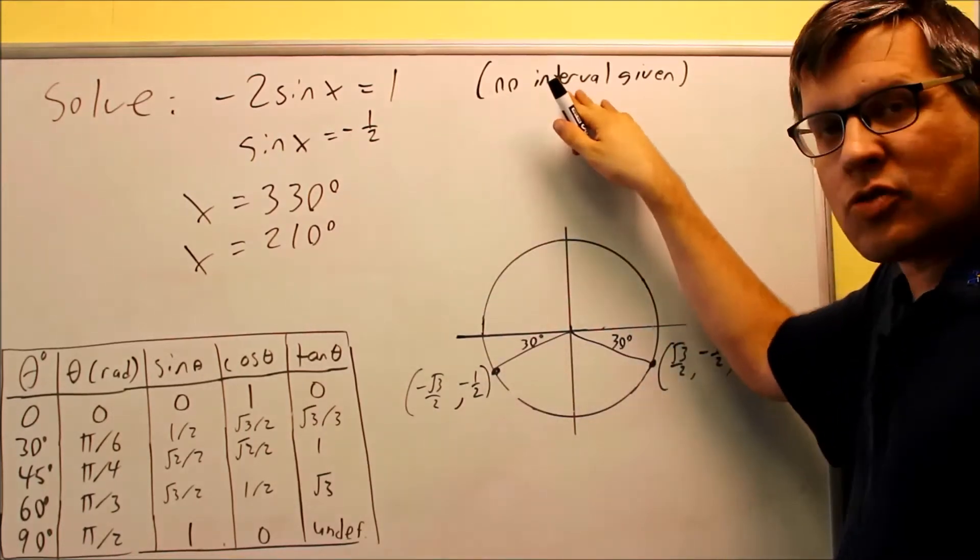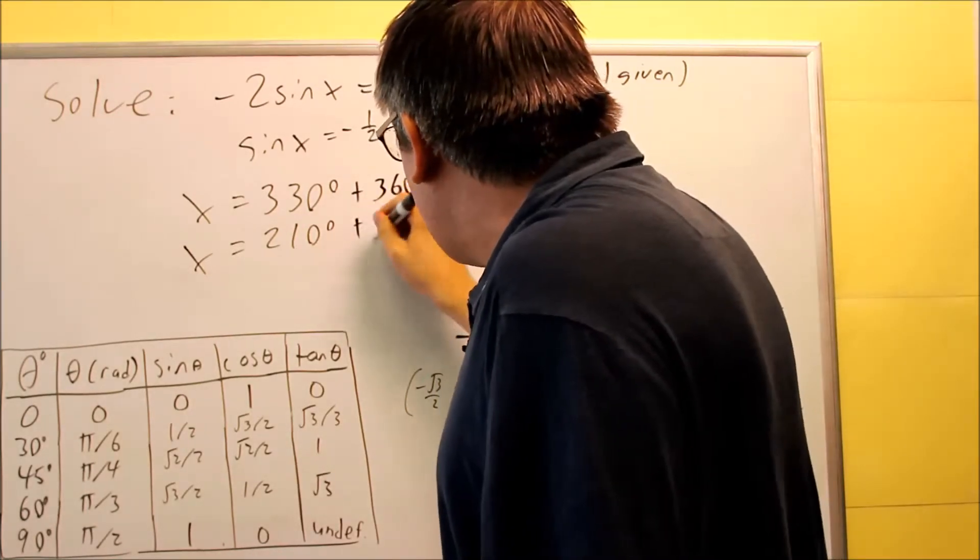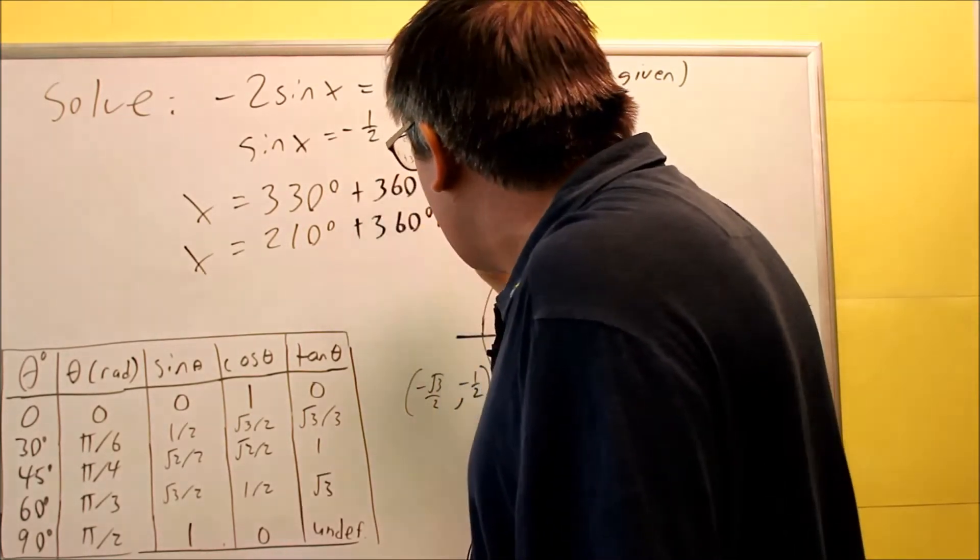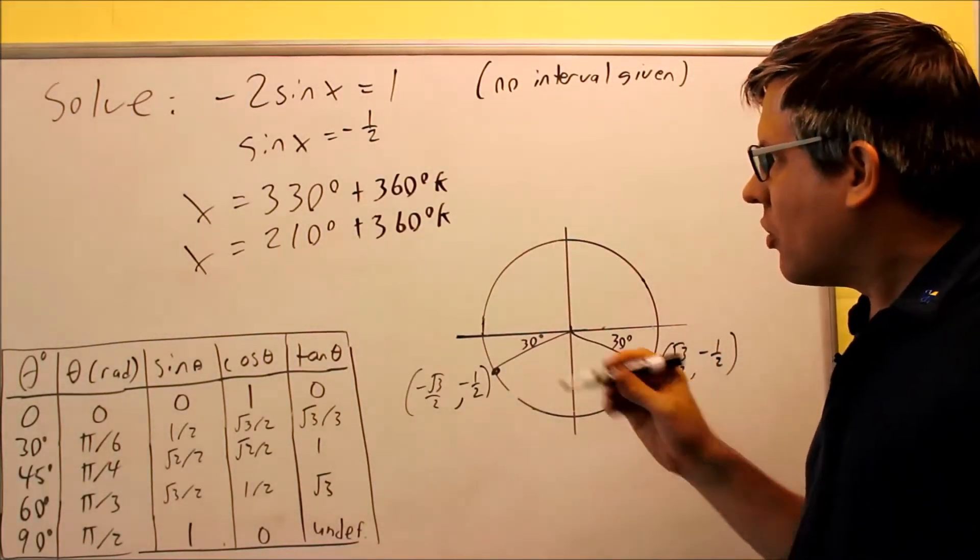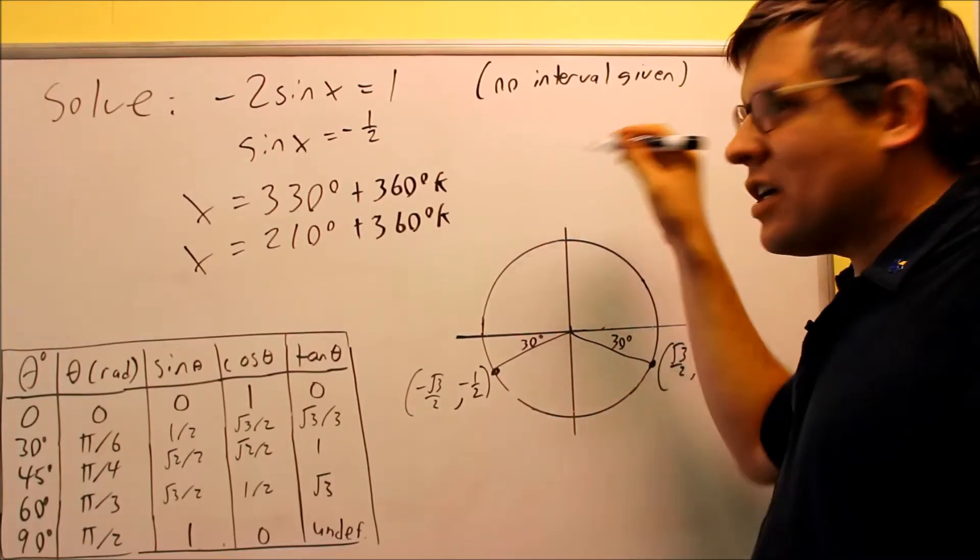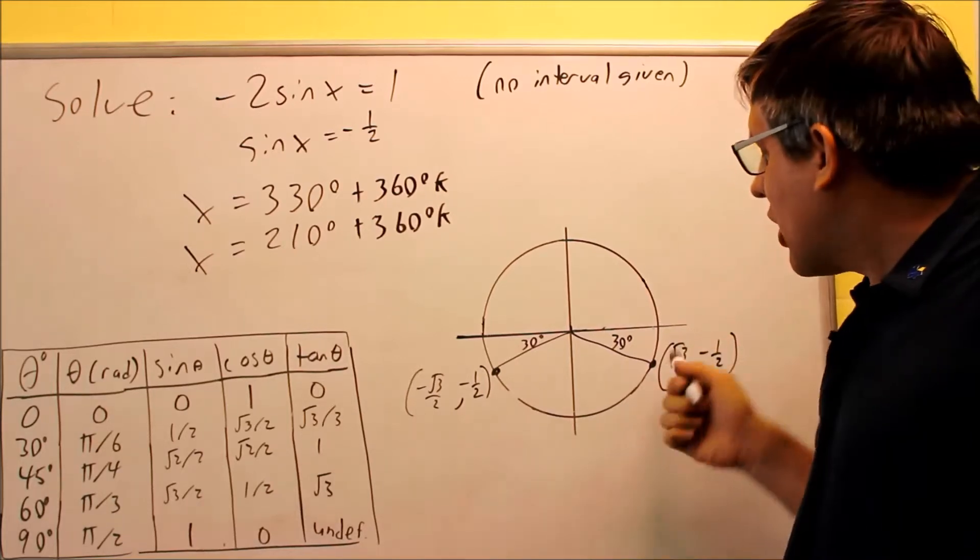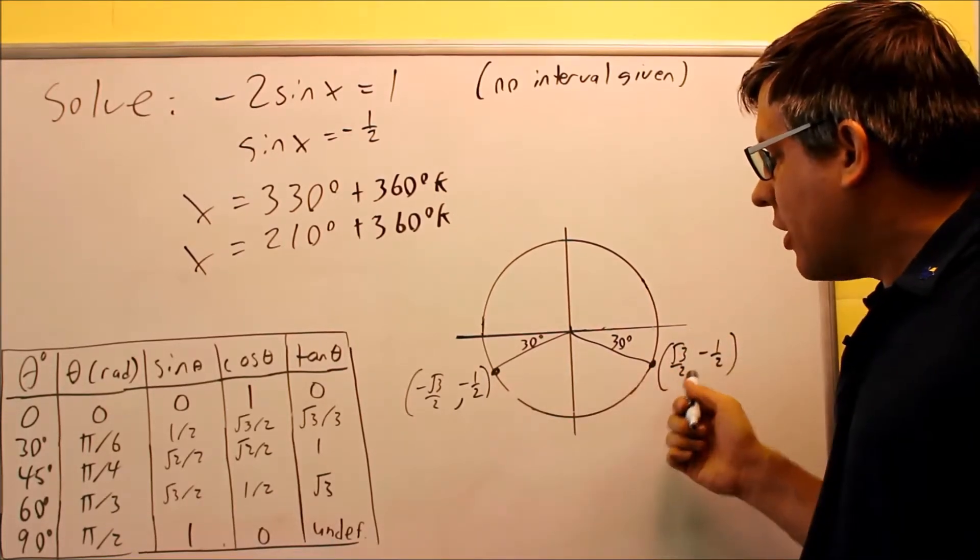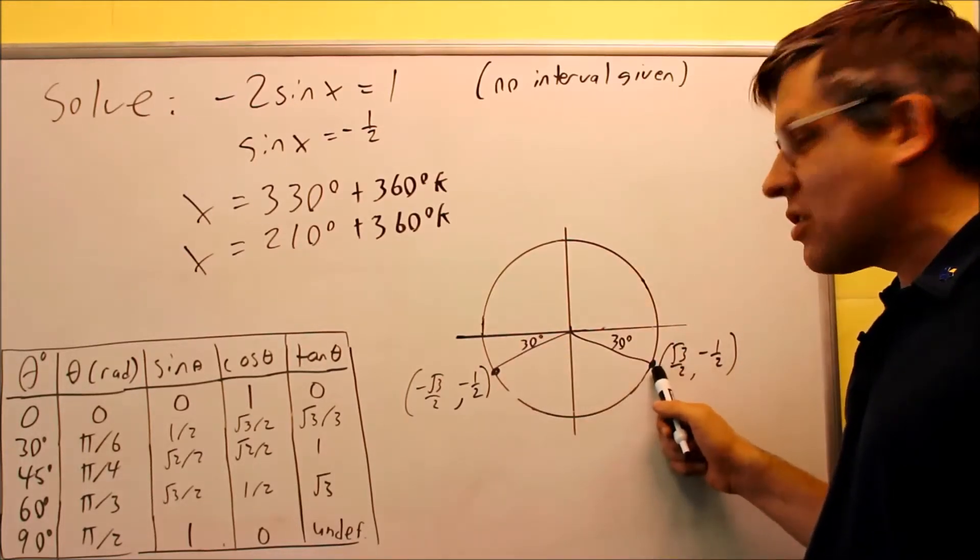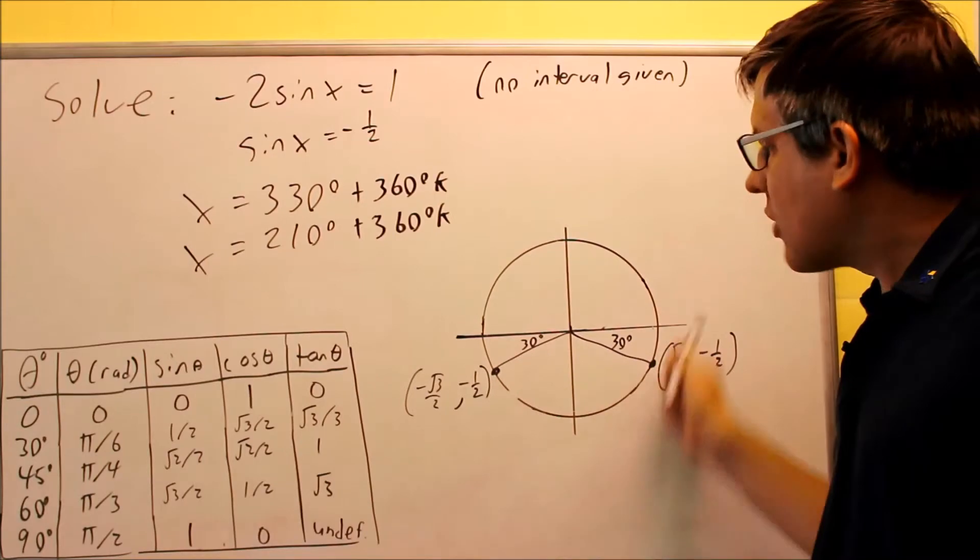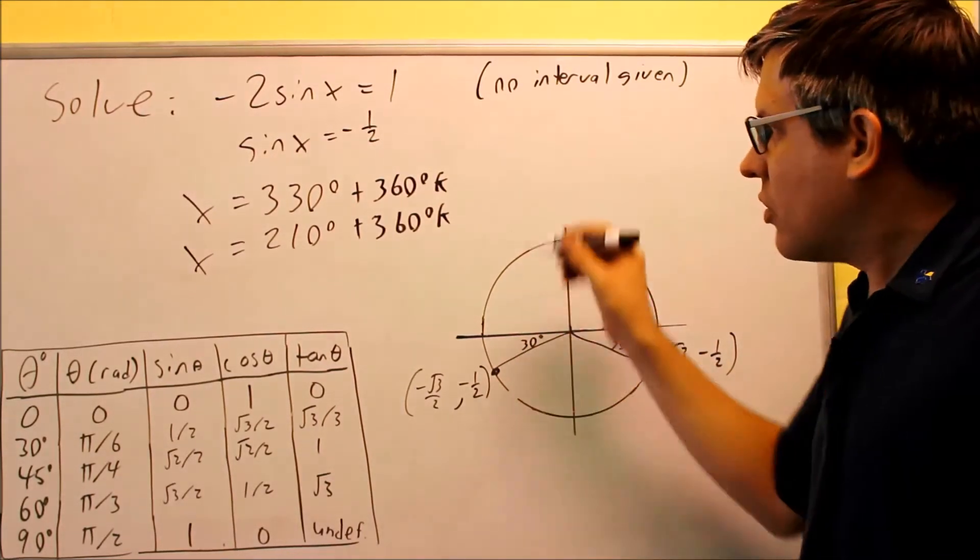Anytime you have a problem like this with no interval given, what we have to do is add a 360k to it. The k would be any kind of integer. That represents multiple revolutions. The k just means any kind of integer, negative or positive. I have to add 360 to each one because if I add 360 to this, it's going to take me back to this point but not this one. So this would be my complete answer.